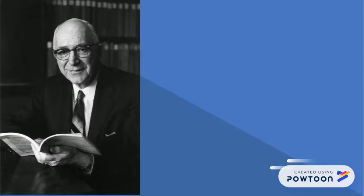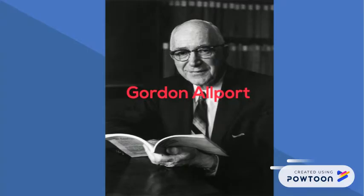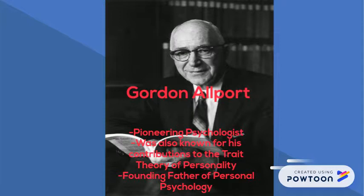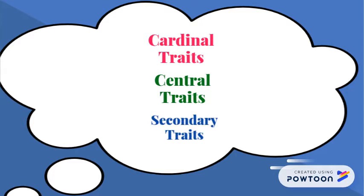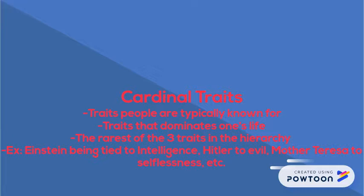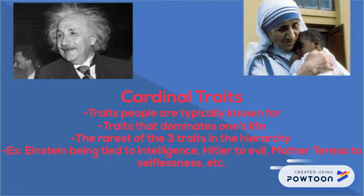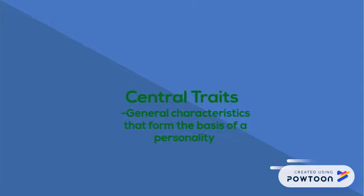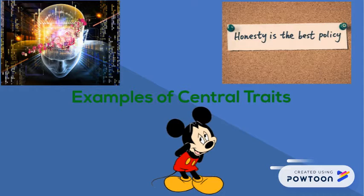Now that we went over the definition, I'm going to come back to Gordon Allport and his brother Floyd Allport. Gordon was a pioneering psychologist best remembered for his contributions to the trait theory of personality. Gordon decided that there was a hierarchy of three levels: cardinal traits, central traits, and secondary traits. Cardinal traits are traits that people are typically known for — traits that dominate one's life. Central traits are general characteristics that form the basic foundations of personality, such as intelligent, honest, shy, etc.